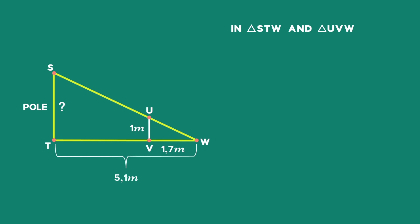In triangle STW and triangle UVW, angle W is common to both triangles. Angle T is equal to angle V, equal to 90 degrees, as both the pole and stick are perpendicular to the ground.